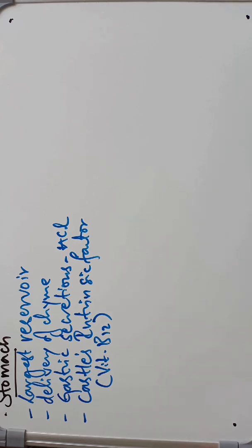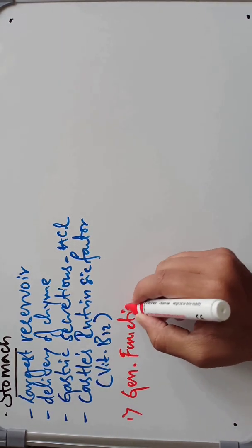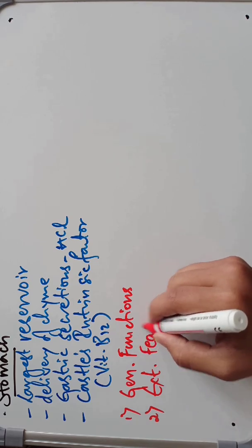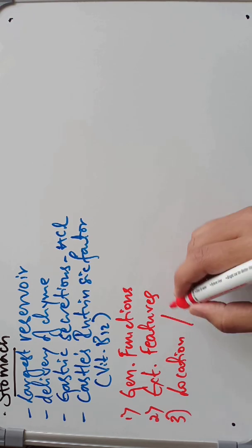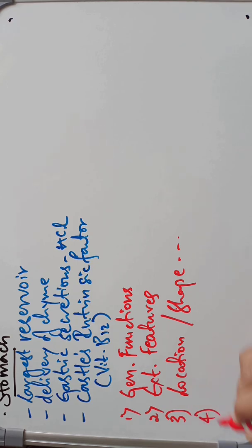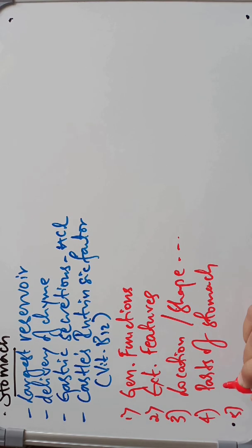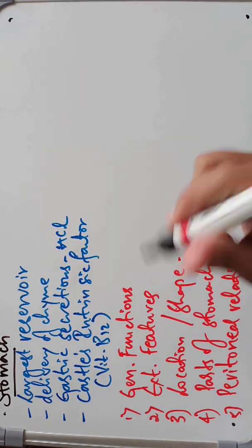We are going to discuss the stomach under: one, general functions; two, its external features; three, its location, shape, size, and capacity; four, the parts of the stomach; and finally, its peritoneal relations.